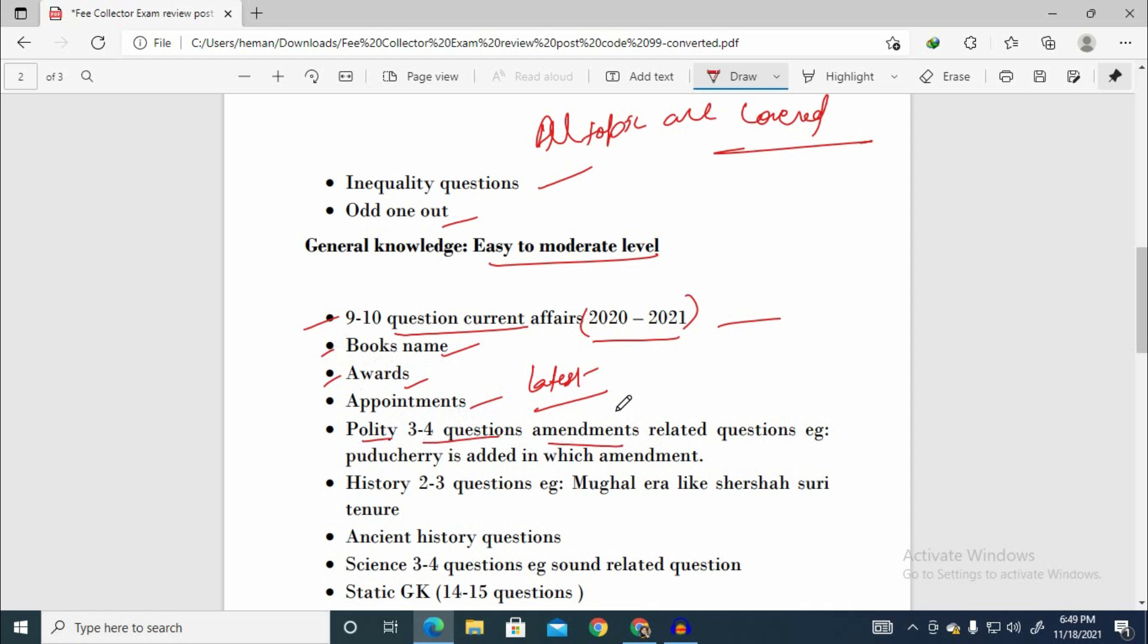Amendment - amendment means Sanshodhan. Sanshodhan related questions. For example, Puducherry - from which amendment and when it was added. That type of question.